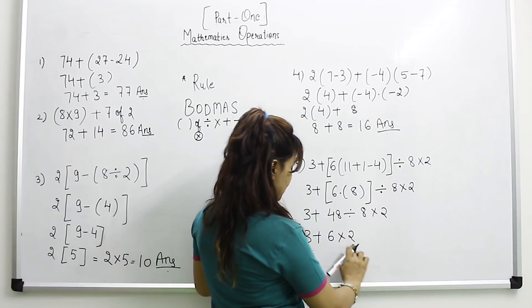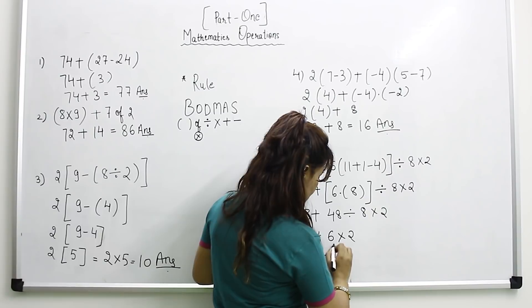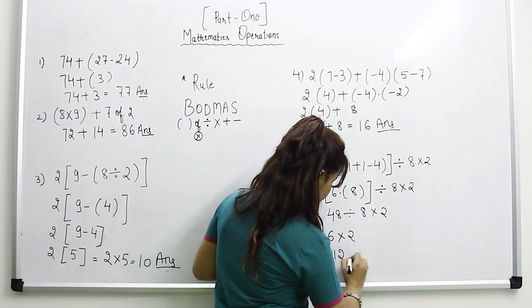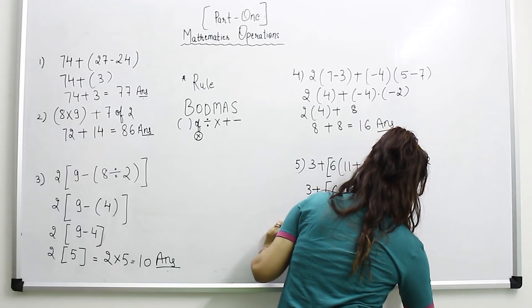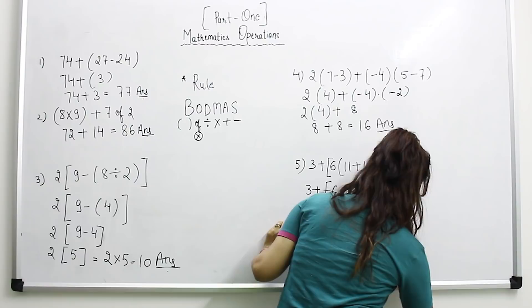Now we have to solve multiplication. 3 plus 6 into 2 equals 12, and finally we get the answer: 15. So we have 15 as the answer.